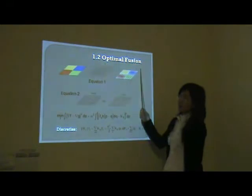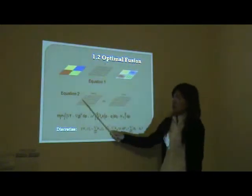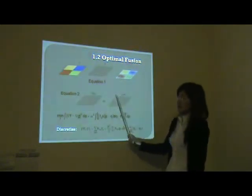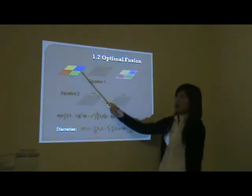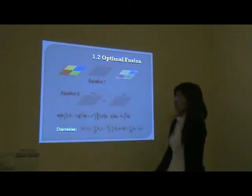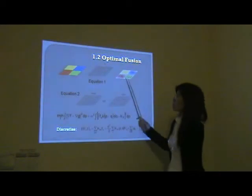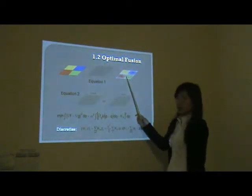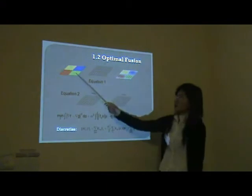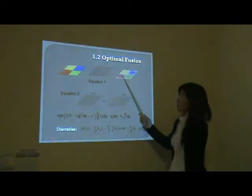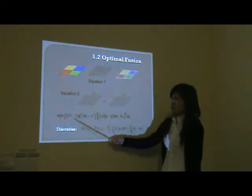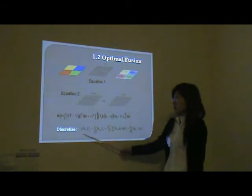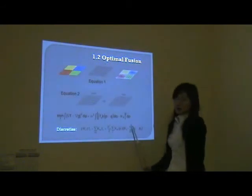Second, Poisson Fusion. We also have the panchromatic gradient as the guidance field. At this time, the multispectral image is induced as a soft constraint. That is, it requires the objective image to have similar color to the multispectral image after downgrading its resolution, just like the second term in the minimization. This is the gradient constraint. Then, we can solve it with a linear equation by simple iterations.